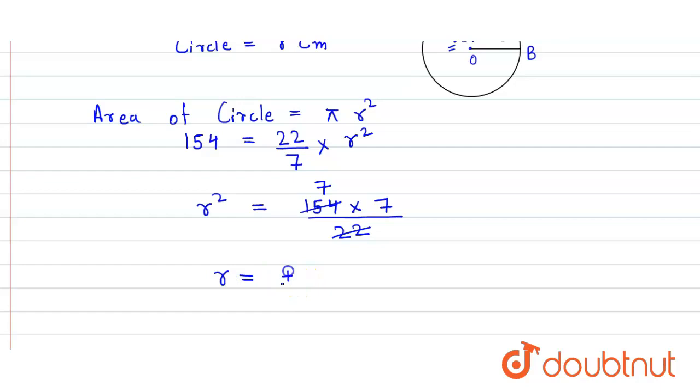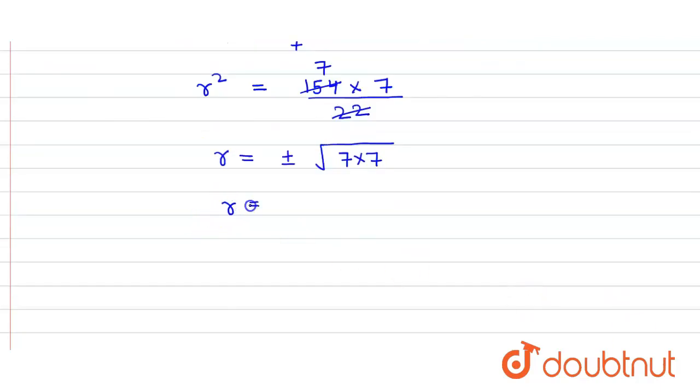So here we get r equals plus minus square root of 7 into 7. So we get r equals plus minus 7 because this 7 into 7 will form a pair.